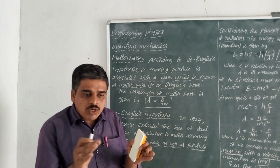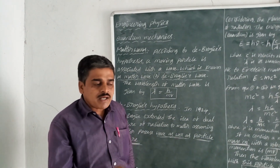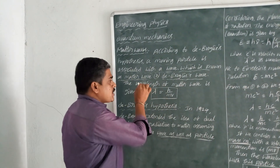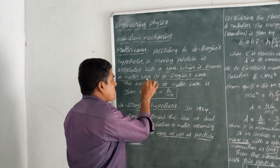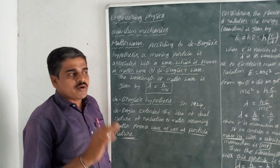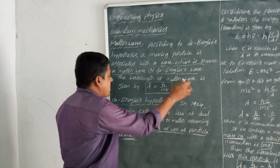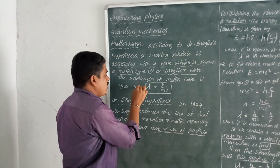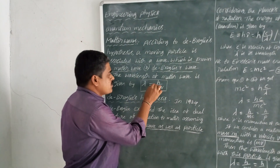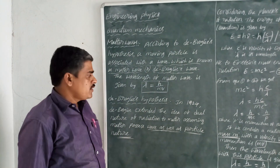According to De Broglie's hypothesis, when a moving particle is associated with a wave, the wave is known as a matter wave or De Broglie wave. The wavelength of the matter wave is given by lambda is equal to h by mv.